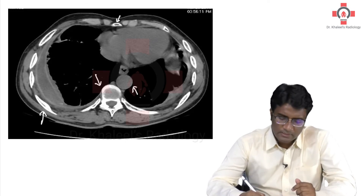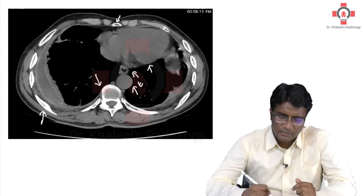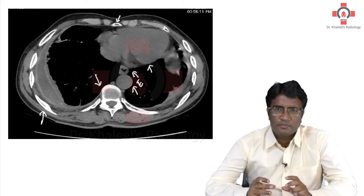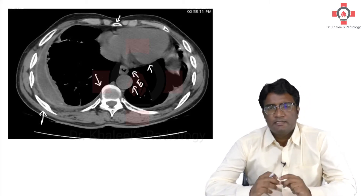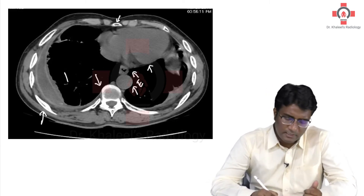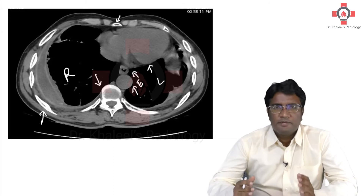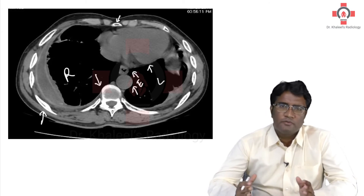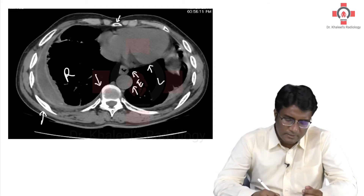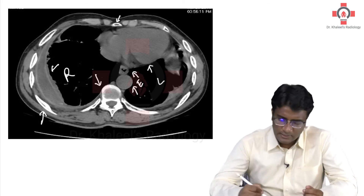This is the descending aorta, this is the esophagus, and this is the heart. Remember, the trachea bifurcates above the heart. So the lucency — the structure which is having luminal air inside — this is your esophagus. You can see this is your right lung and this is your left lung. Remember, the patient is lying down with his legs facing you, so do not get confused between right and left. In the right pleural space, you are seeing some collection.